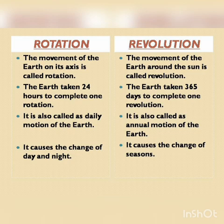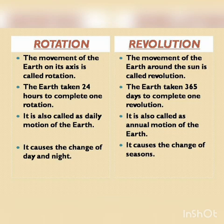Now let us differentiate between rotation and revolution. Rotation is the movement of the earth on its own axis, while revolution is the movement of the earth around the sun. Rotation takes 24 hours and is called daily motion; revolution takes 365 days and is called annual motion. Rotation causes the change of day and night, while revolution causes the change of seasons. These are the main differences between the two motions, completing our chapter on motions of the earth.